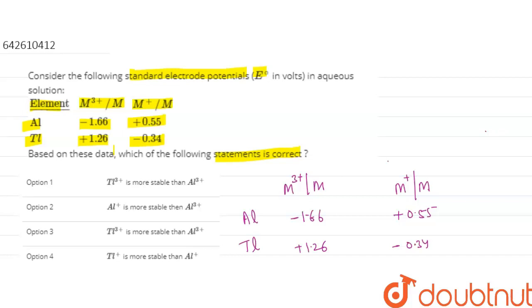So basically, which type of electrode potential is it? It is the reduction potential. How can we identify that it is a reduction potential? When our metal goes from M3+ to M, M+ to M,